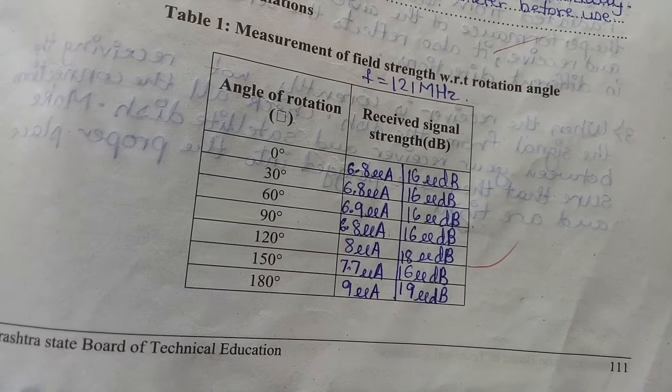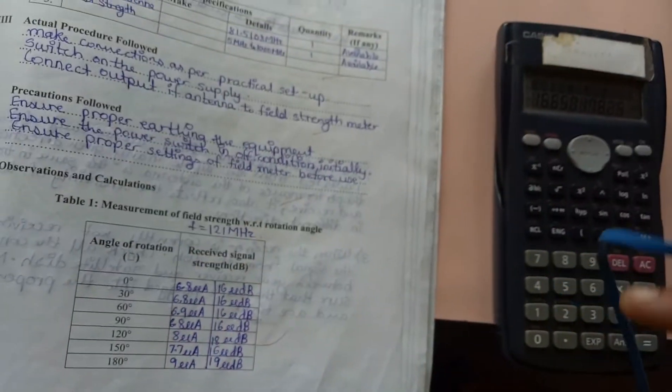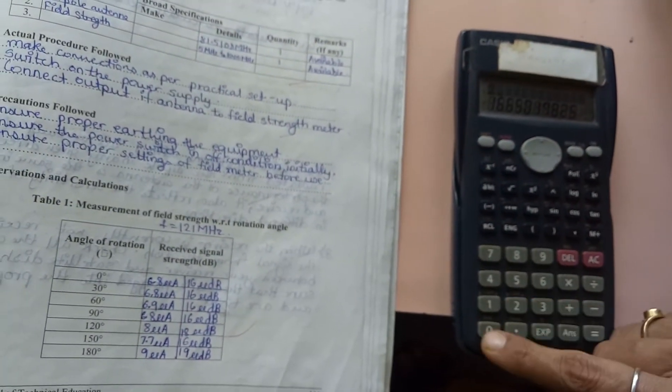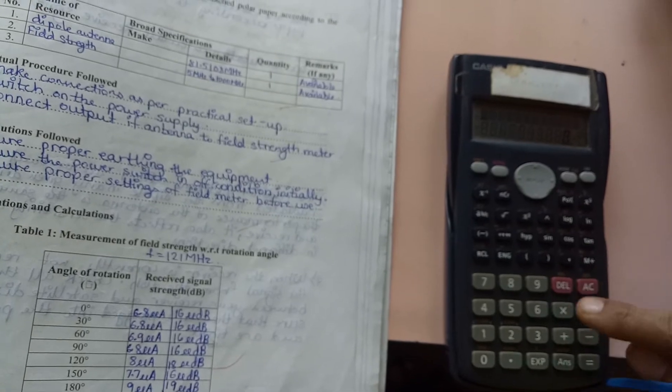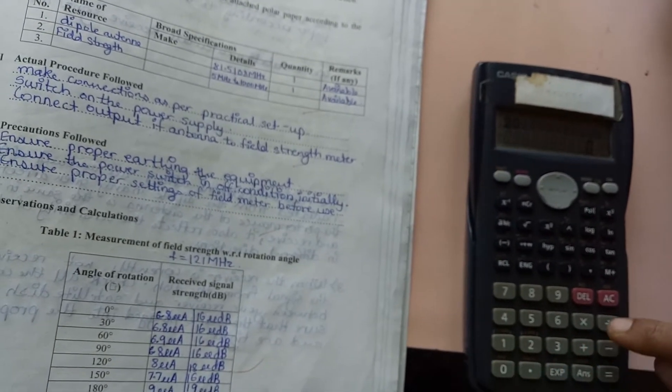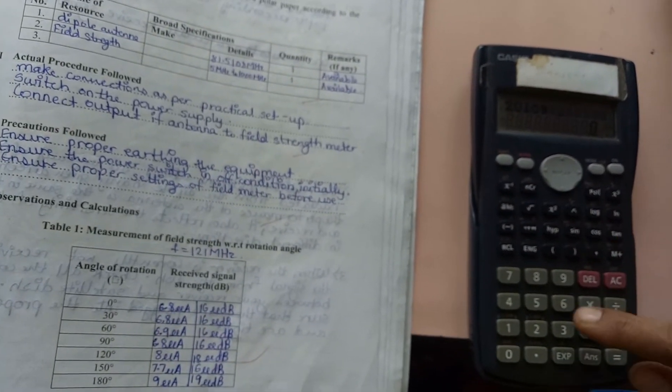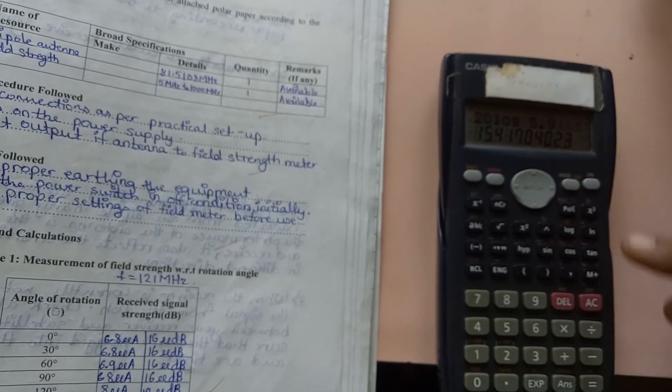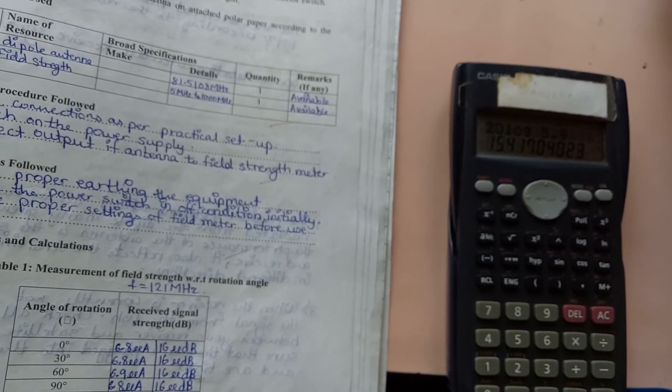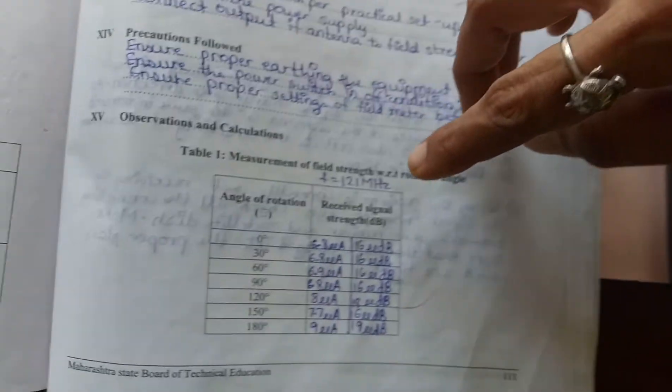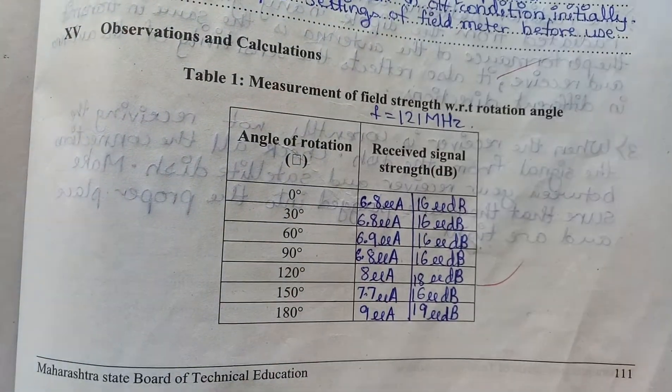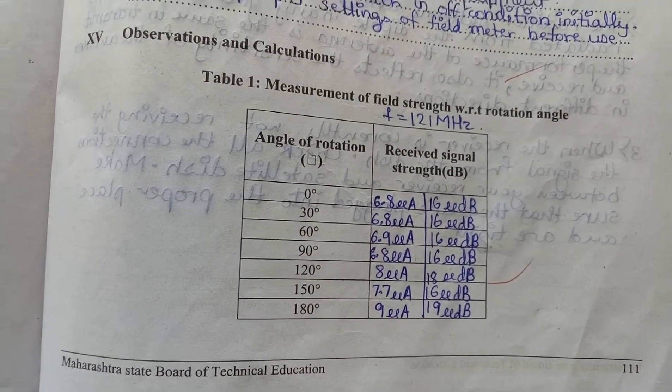To convert to dB, again we use the formula 20 log of 5.9. It is 15.4 dB. We put the value here, 15.4 dB.